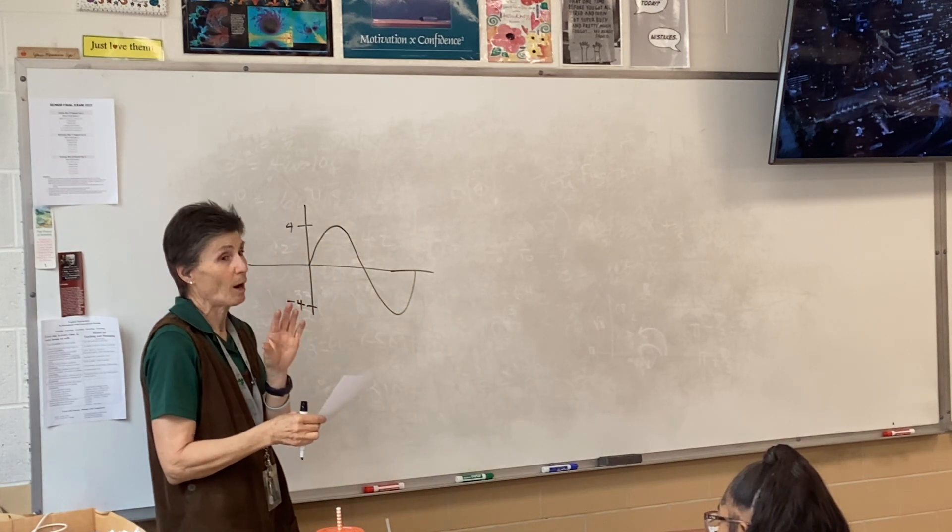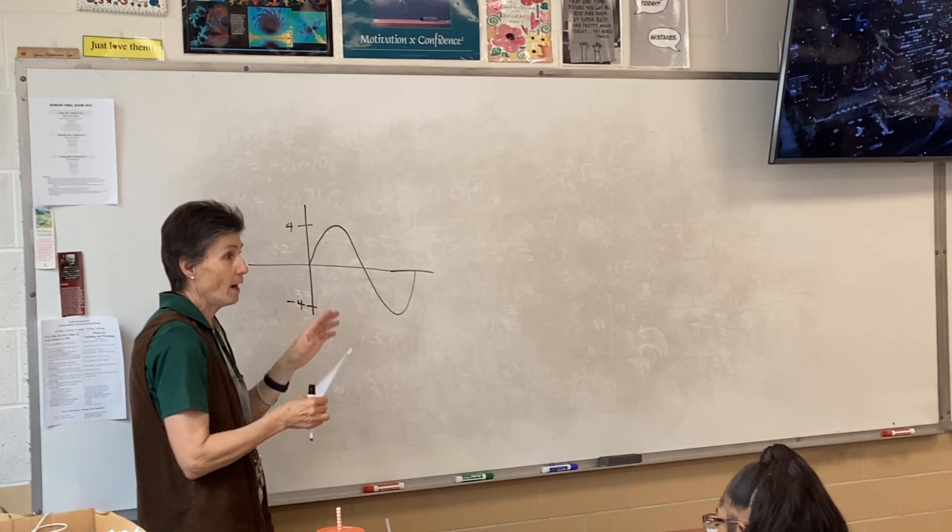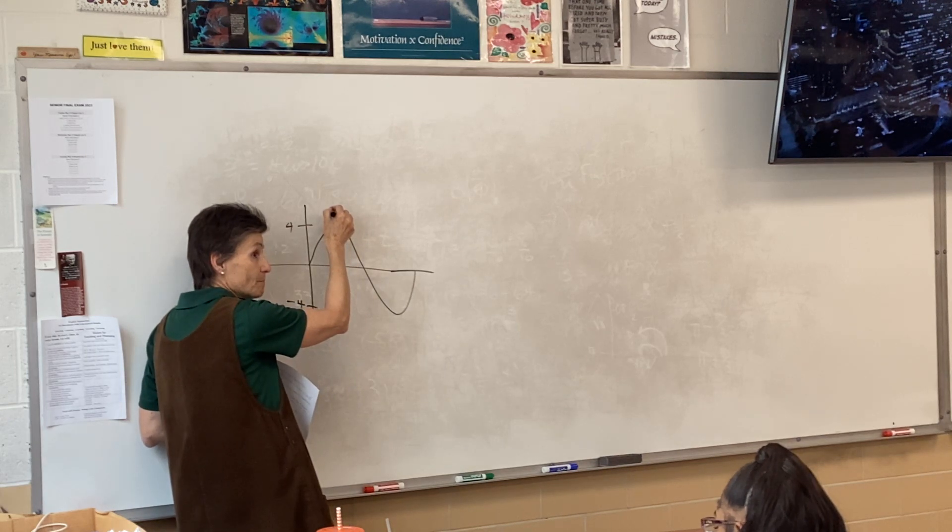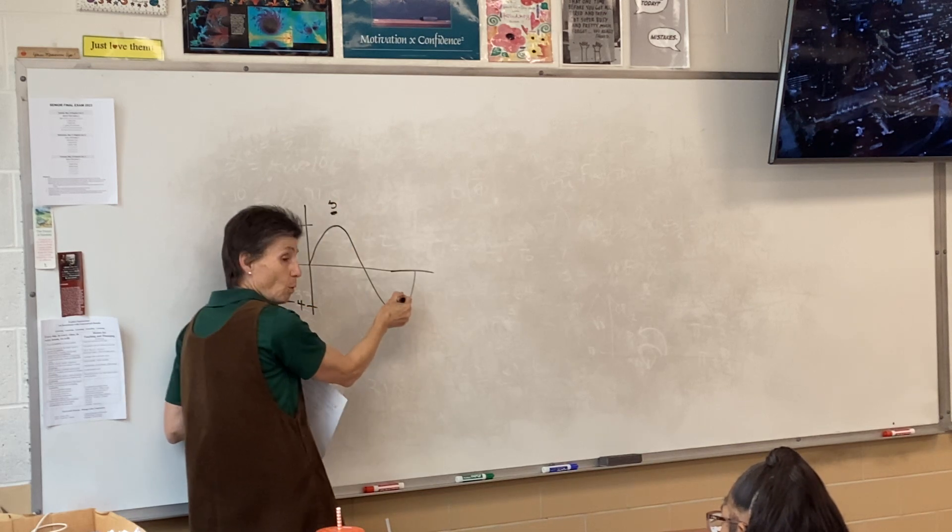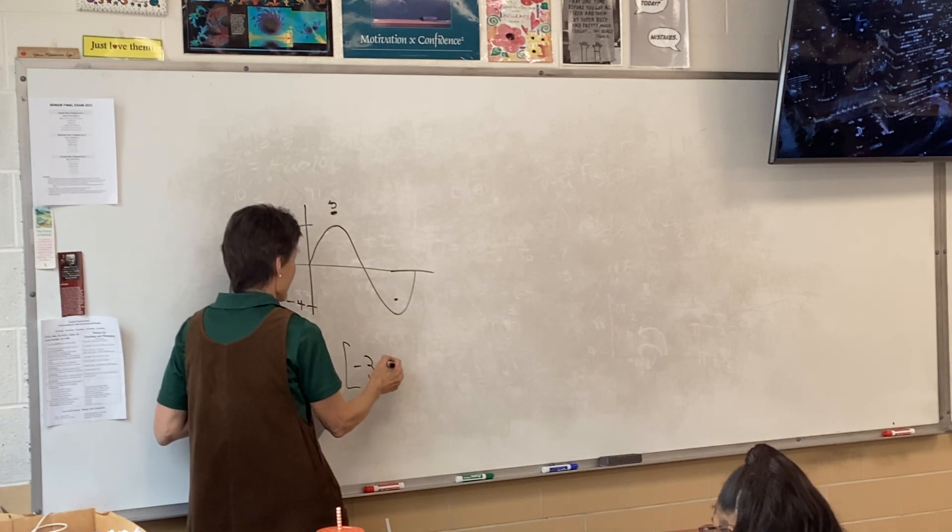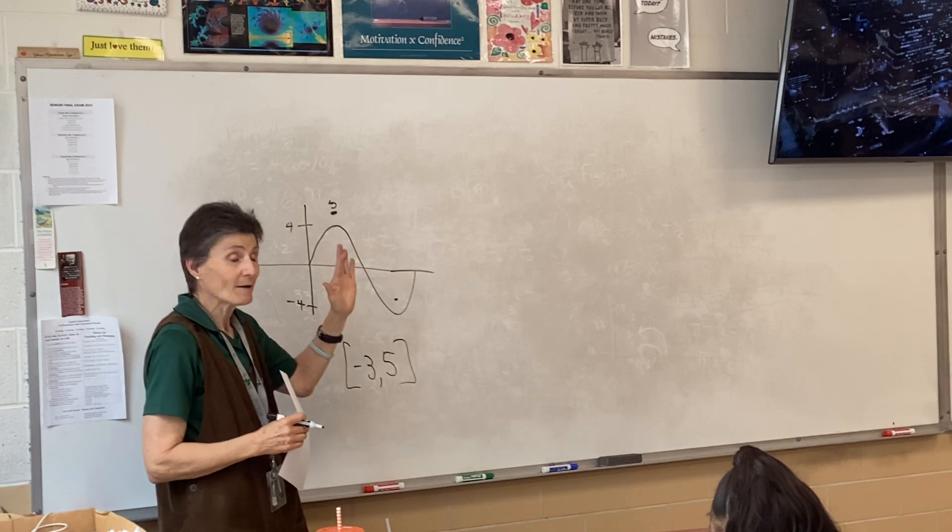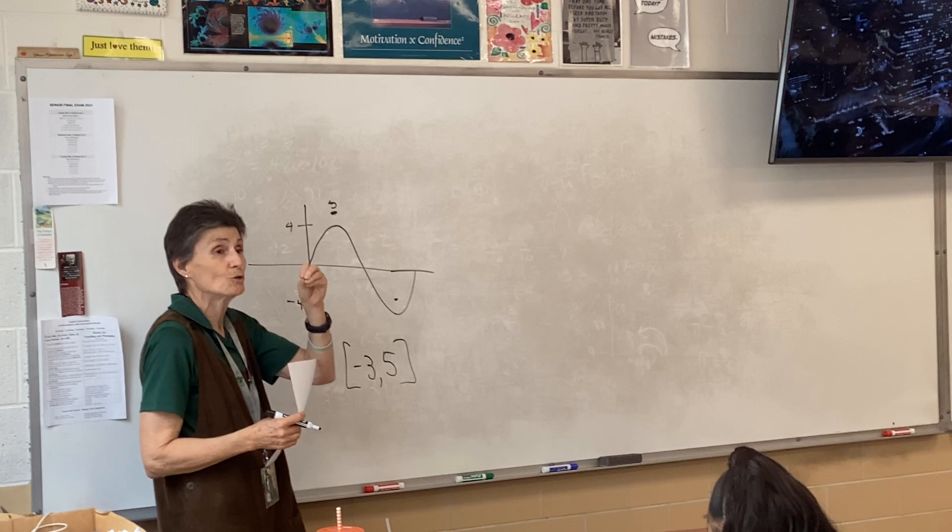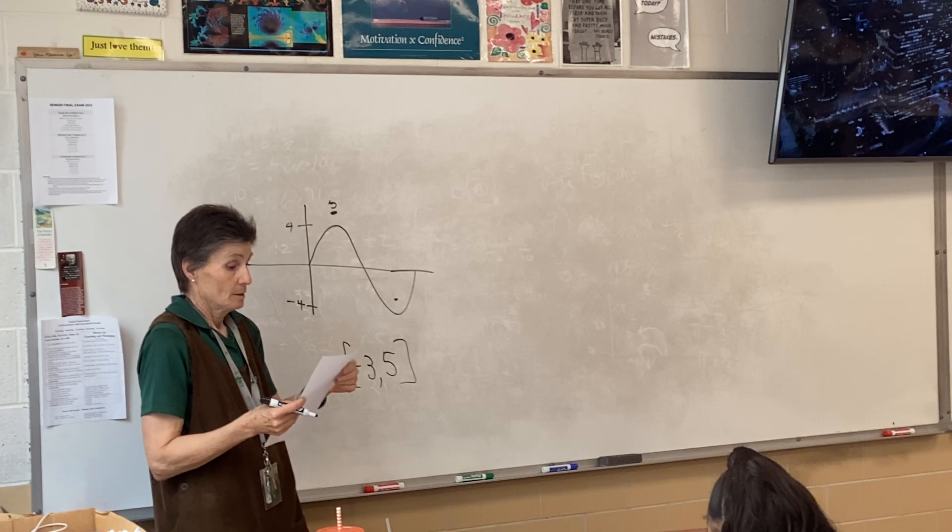That's amplitude. What else has happened to this problem? It shifted up 1. So instead of the high point being at 4, the high point is now going to be at 5, and the low point, instead of being at negative 4, is now going to be at negative 3. Your range is negative 3 to 5. You don't have to graph the whole thing.